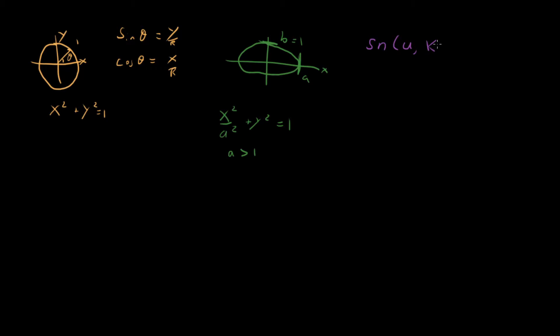And k, where k is going to be equal to the eccentricity, which from the last video we know is root 1 minus b squared over a squared. So in our case, it's just root 1 minus 1 over a squared.